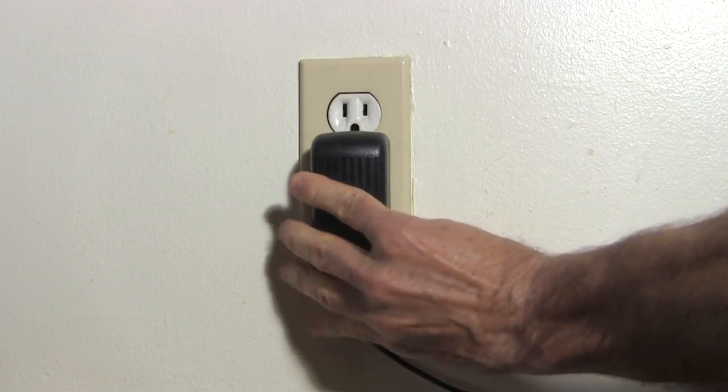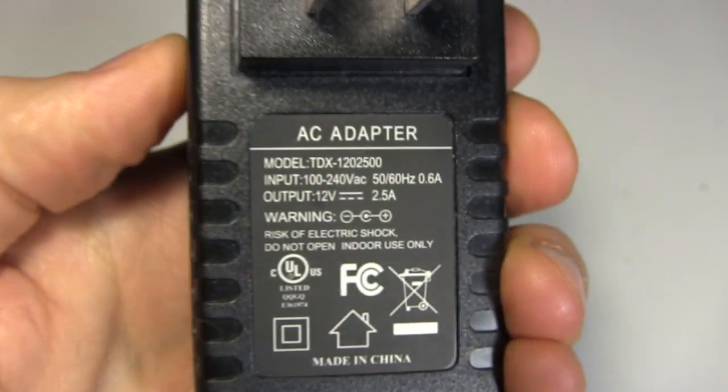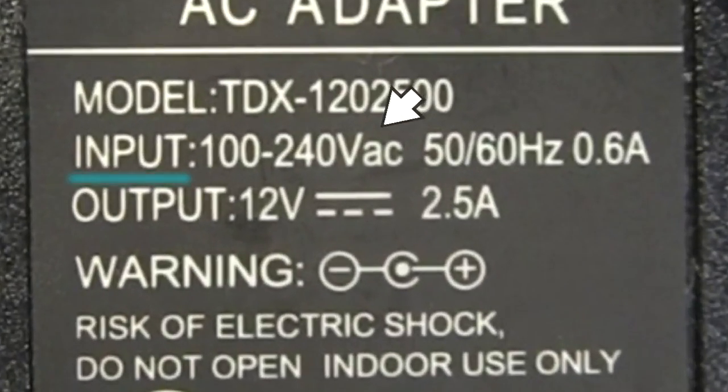Though, if you're plugging in an adapter, most adapters convert electricity from AC to DC. You can see that if you read the label. The input usually says AC, but for the output, instead of saying DC, it often has this horizontal line with a dashed line under it, which means DC.